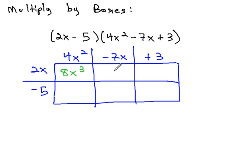In the top center, the headers are now negative 7x times 2x, which is negative 14x squared. In the top right, the headers are now positive 3 times the 2x is 6x.